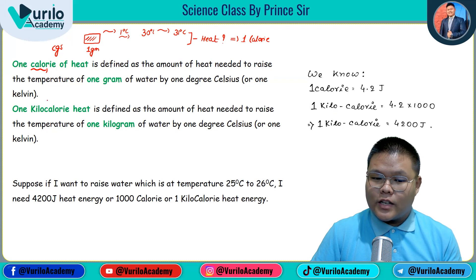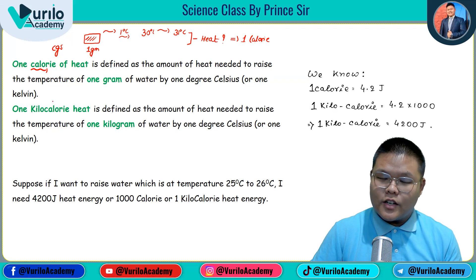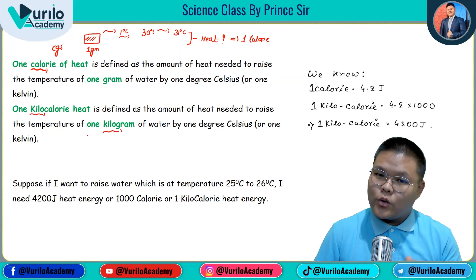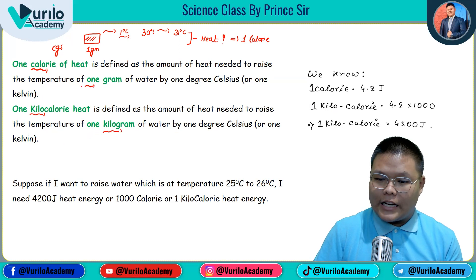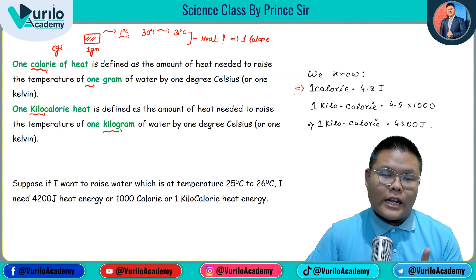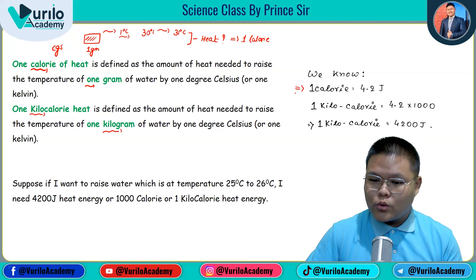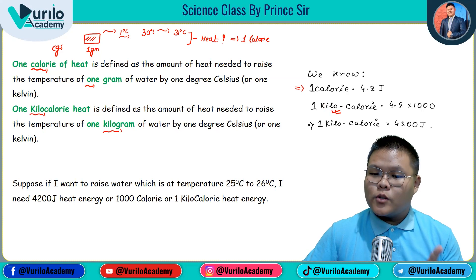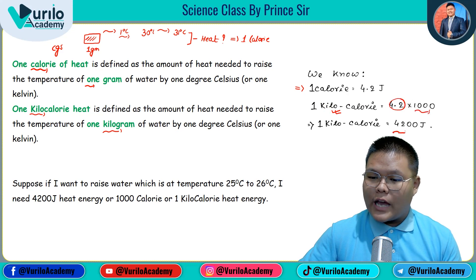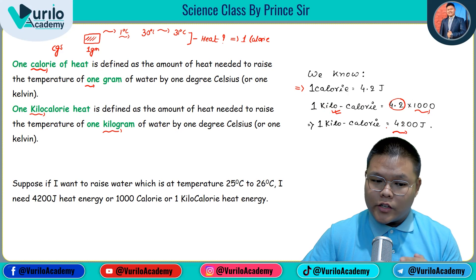Now what about one kilocalorie? For one kilocalorie we use kilograms instead of grams — that is the difference. One calorie is equal to 4.2 Joules. So one kilocalorie means we multiply 4.2 by one thousand, which gives us 4200 Joules. Remember this value.